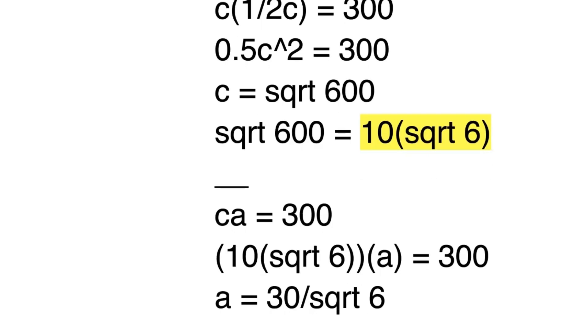Divide both sides by 10, we get 30 equals square root 6 times A, and then just divide 30 by square root 6. So A equals 30 divided by square root 6.